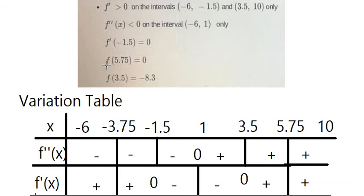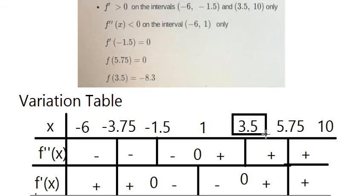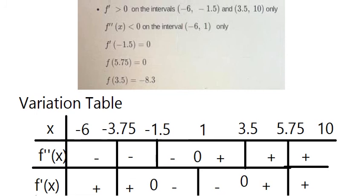Now let's look at the function f at 5.75. The value at 3.5 is about 0, and the value at 5.75 is about 0.75. So the value 0.75 here is the critical point value.